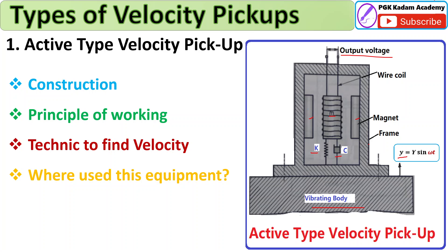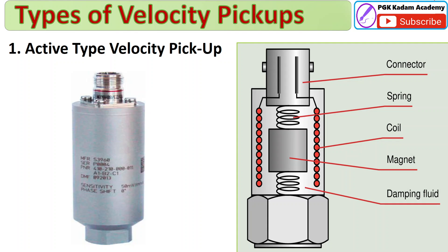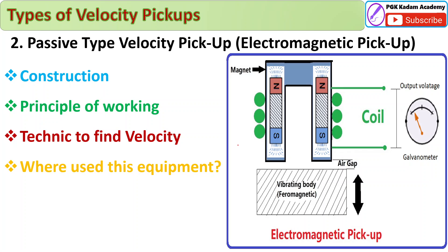The output voltage signal is calibrated to give the velocity of vibration. Just like a seismometer, in the velometer also the damping factor is kept at 0.1. Now looking at the actual active velocity pickup device — you can see the spring, coil, magnet, and damping fluid with damping coefficient, along with connectors. Manufacturing companies produce this type of active velocity pickup.